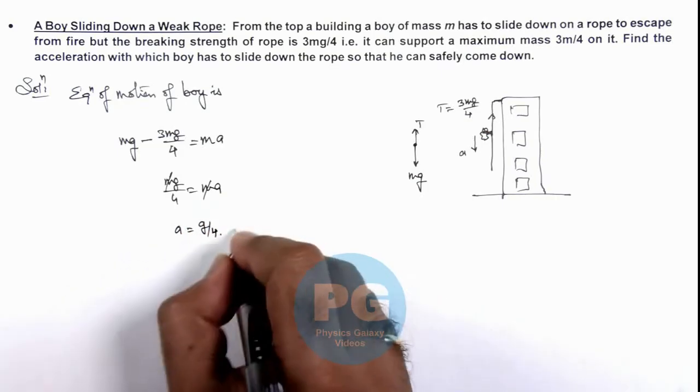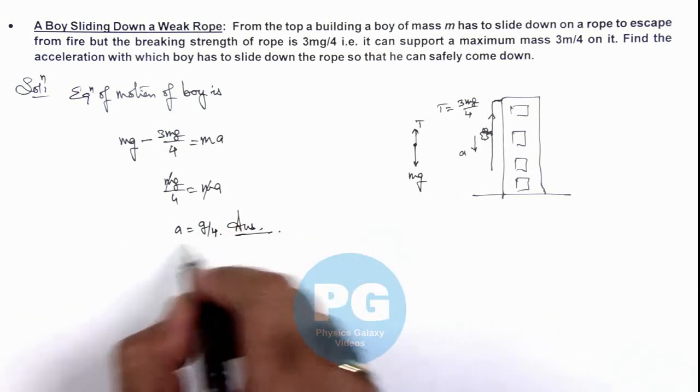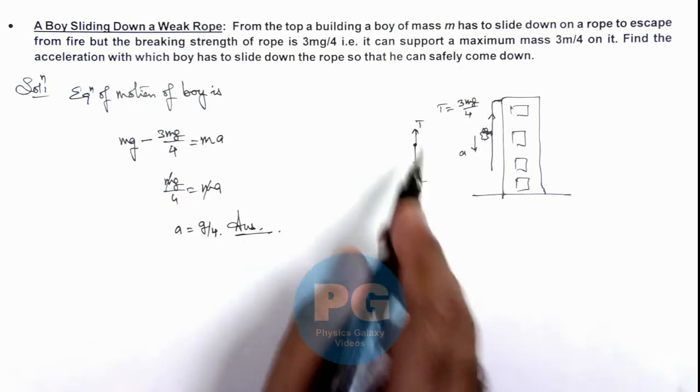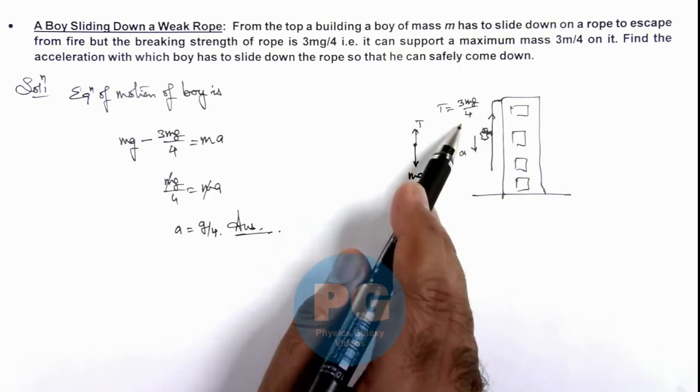So in this situation, this would be the result of the problem. If with the acceleration g/4 the boy slides down, then the tension in the string will be 3mg/4.